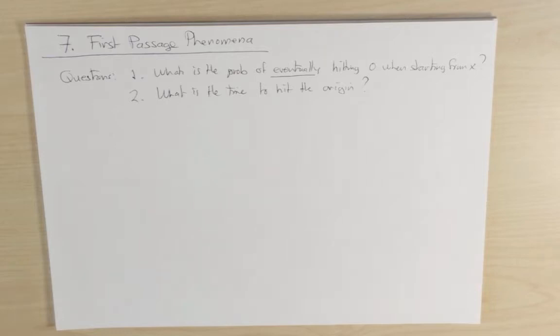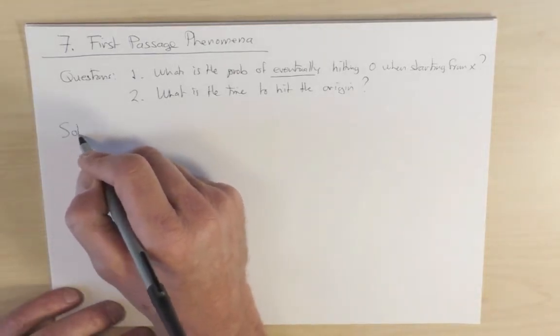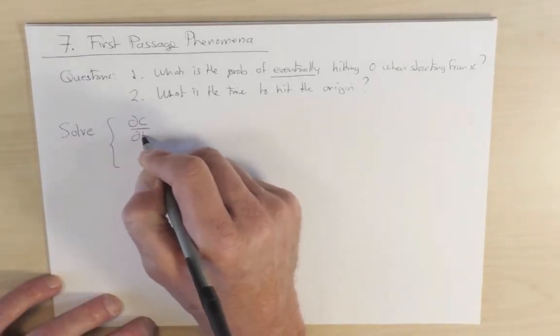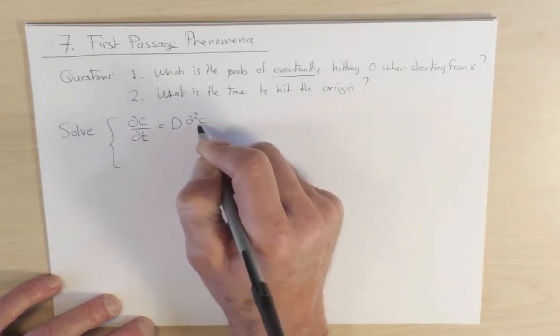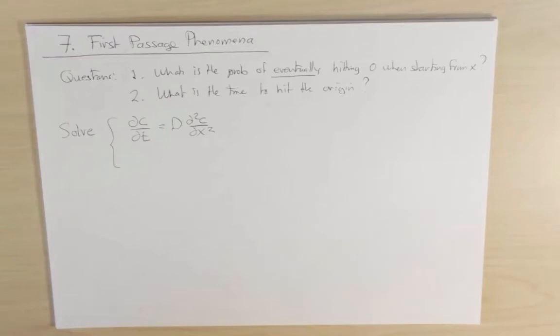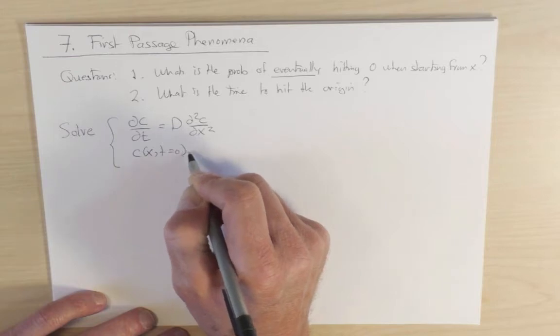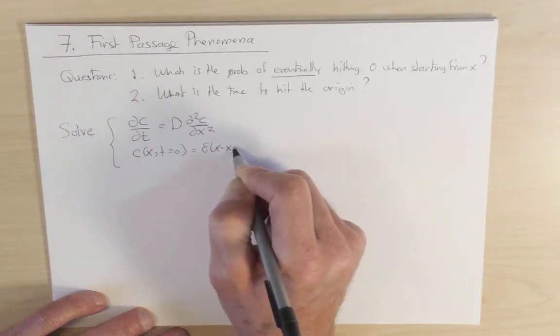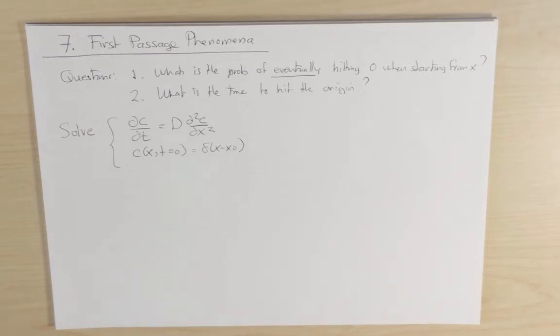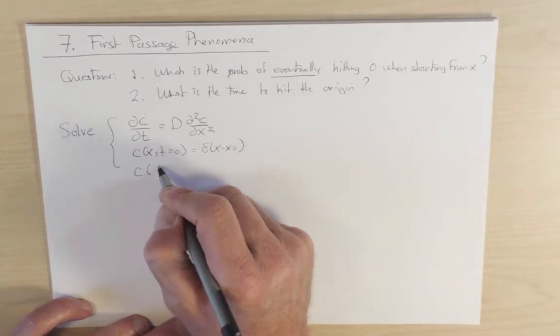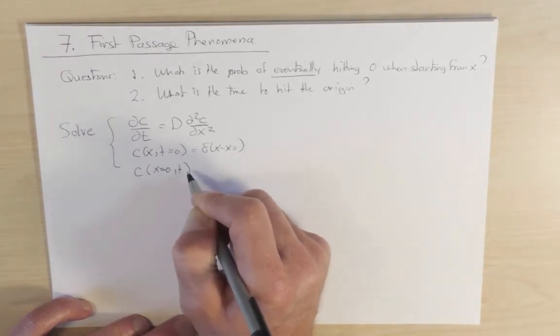Namely, I'm going to solve the diffusion equation on the positive half line. So I'm going to solve dc/dt equals D times d²c/dx². I'm using the letter c just because it's conventional for concentration. It's the same as p in earlier slides. With the initial condition that c(x,t=0) equals delta of x minus x naught. So I'm starting at some position x naught on the positive half line. And there's also a boundary condition to make this a well-defined problem. Namely, c at x equals zero at any time t is equal to zero.